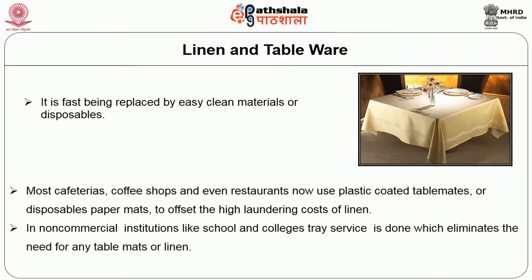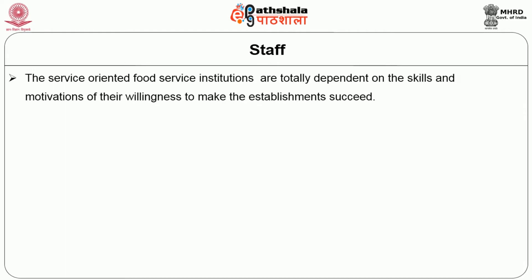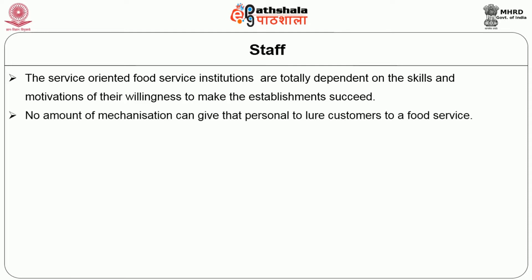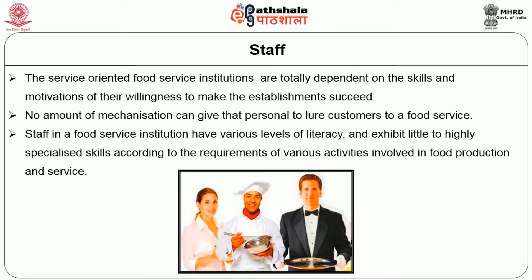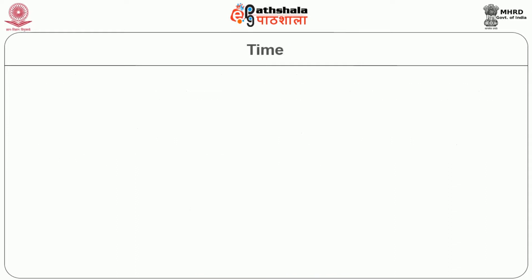In non-commercial institutions like schools and colleges, tray service is used, which eliminates the need for any table mat or linen. The next important aspect in management of resources is staff. Service-oriented food service institutions are totally dependent on the skills and motivation of their staff and their willingness to make the establishment succeed. No amount of mechanization can give that personal touch to lure customers to a food service. Staff in a food service institution have various levels of literacy and exhibit little to highly specialized skills according to the requirements of various activities involved in food production and service. Getting work done by the people and making their individual jobs and goals fit into those of the establishment and according to customer requirements is a difficult but challenging task.